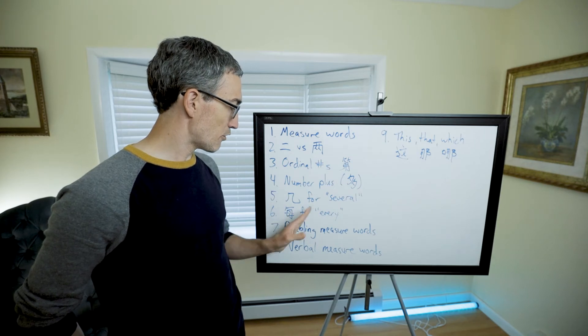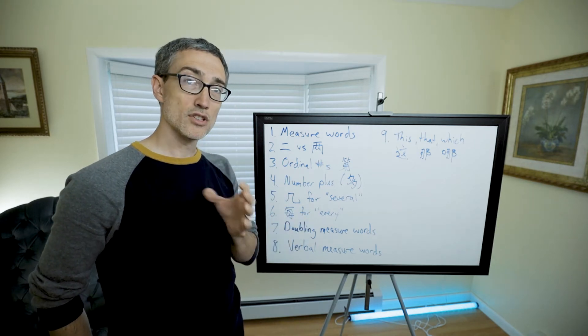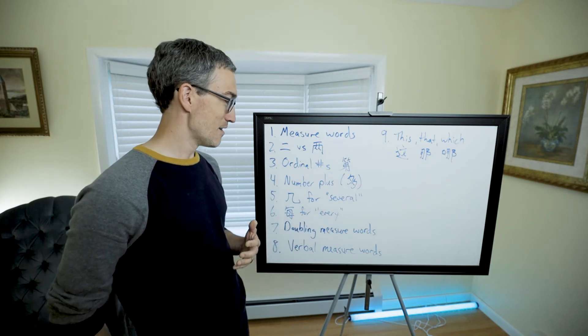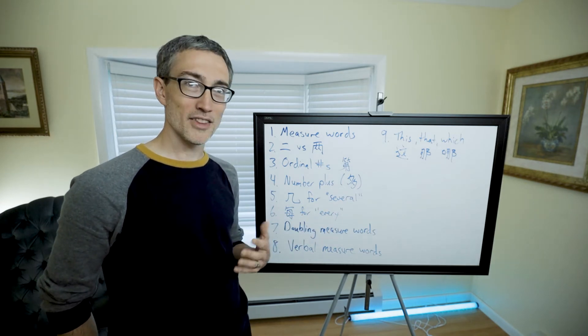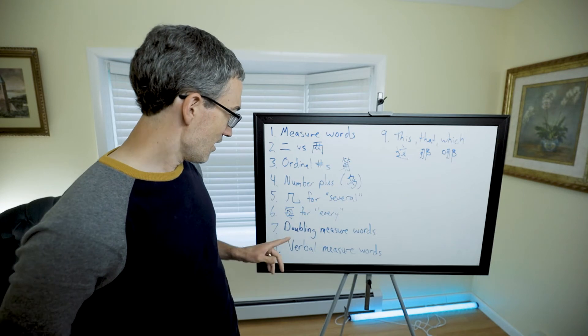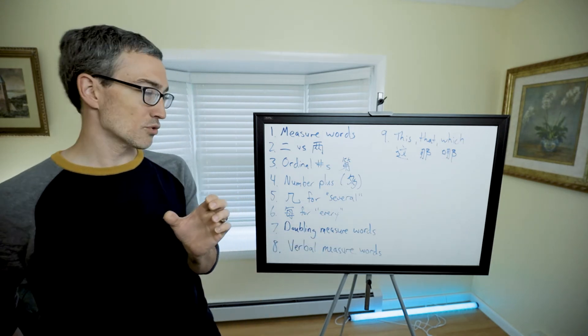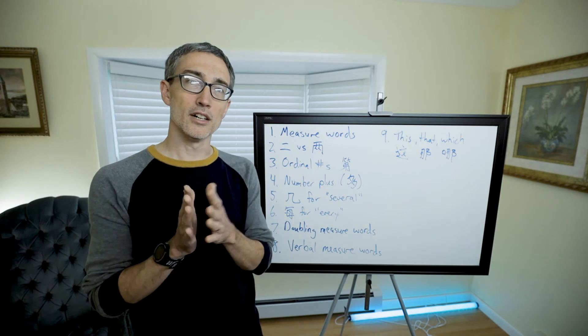Then we talked about 每 (měi) to mean every. This is used before, attached to a measure word. So 每个人 (měi gè rén) is every person. 每条河 (měi tiáo hé) would be every river. Then we talked about doubling measure words.